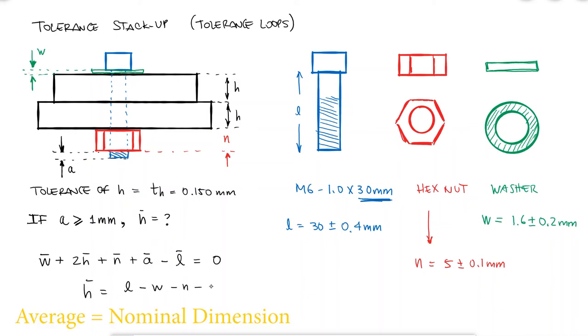I could do the same for A and find that the maximum and minimum value for A will depend on the tolerances of the other dimensions. A maximum value for A would be found when dimension L is highest and dimensions H, W, and N are lowest,